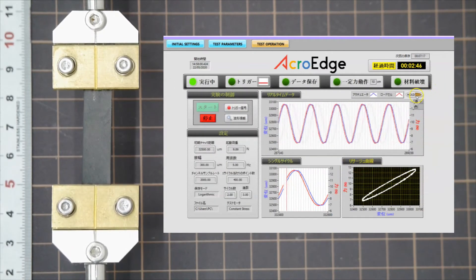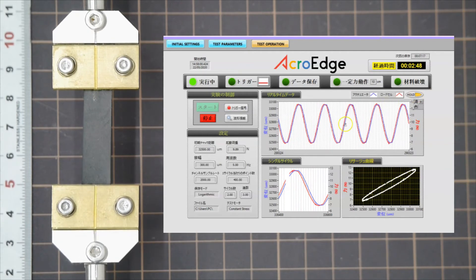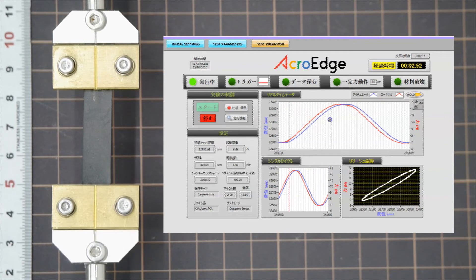In this rubber sample, a time delay between the applied stress and resulting strain curves is characteristic of its viscoelastic properties.